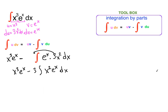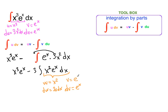Our next step is to use integration by parts again for this integral. We define a new u — let's call it w — which is x squared, and dv is e to the x. If w is x squared, then dw is 2x dx. The anti-derivative of e to the x is again e to the x.